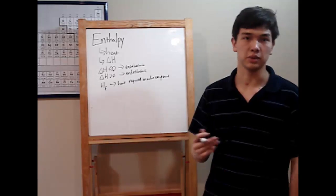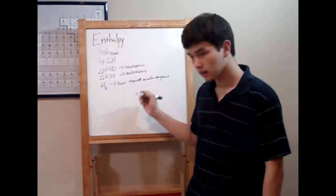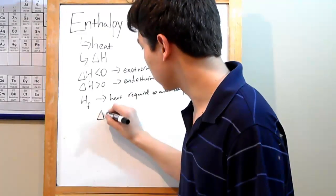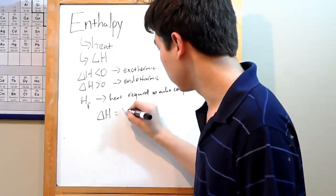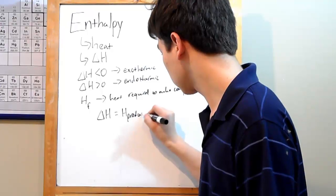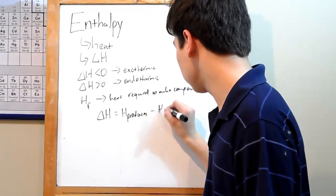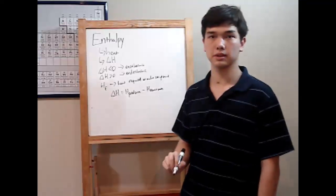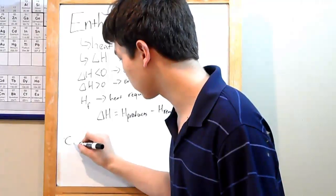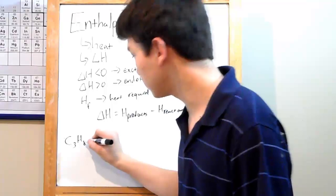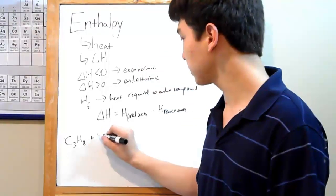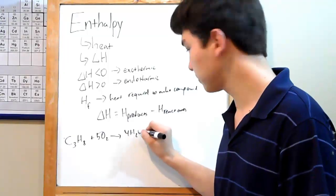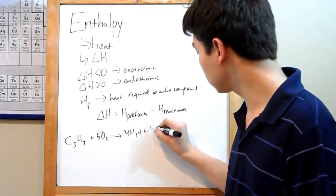So let me just show you how this works. In calculating H for a reaction, you need to remember that the total delta H is H products minus H reactants. And I'll just demonstrate that with this chemical equation, which might look a little familiar.